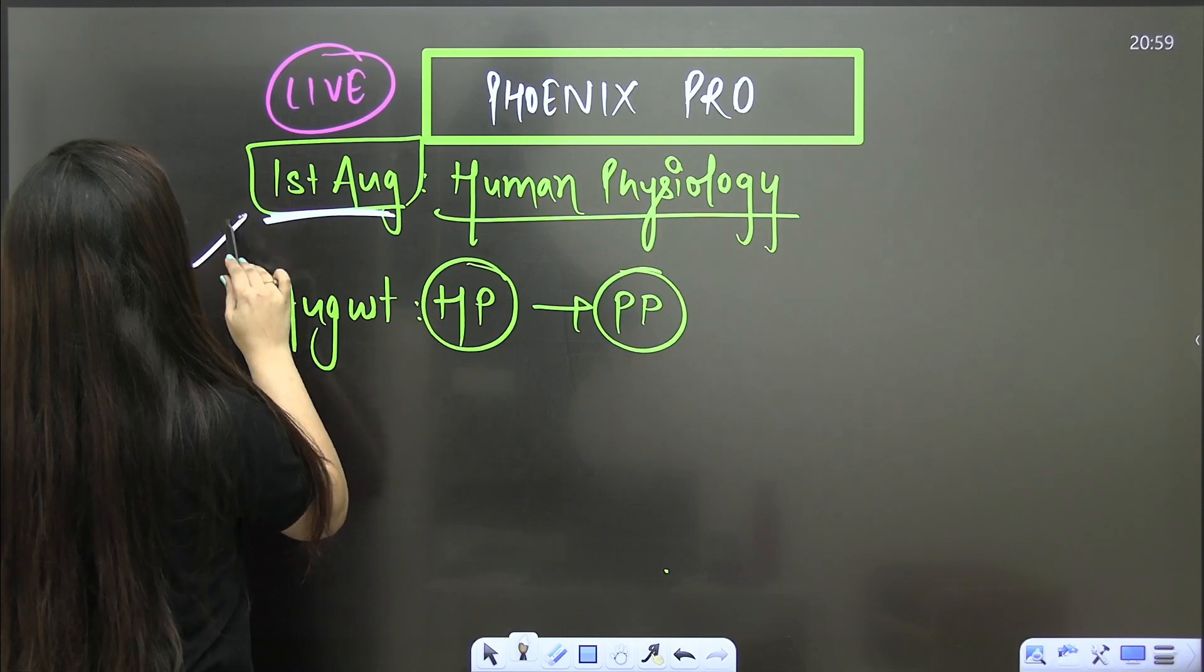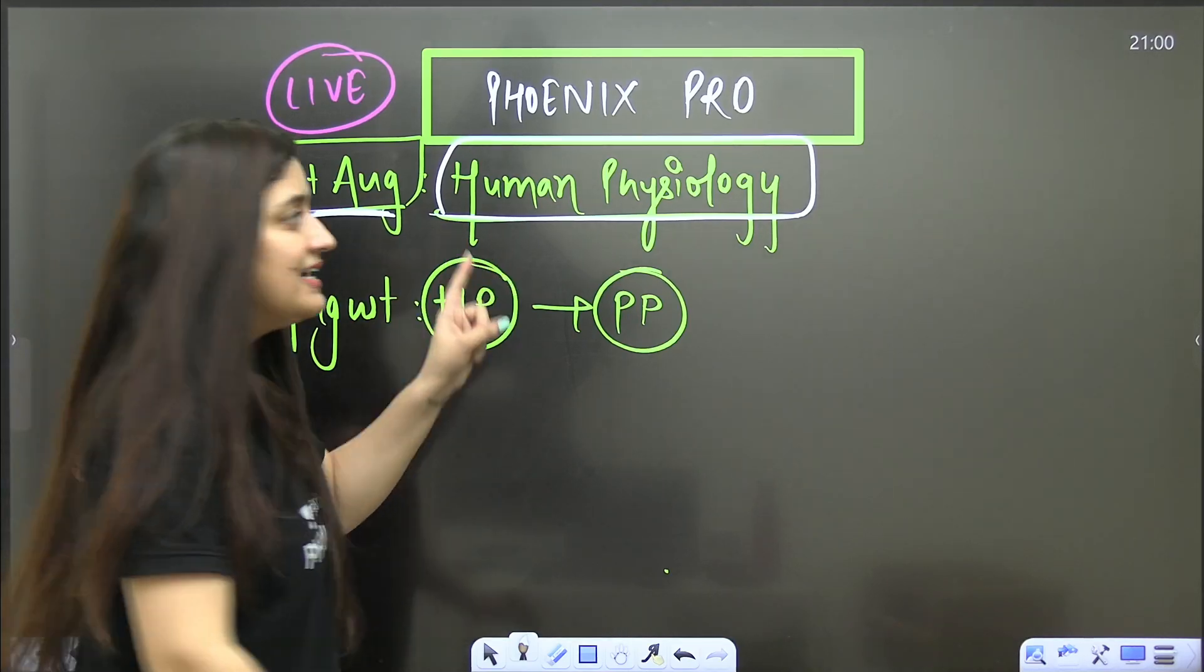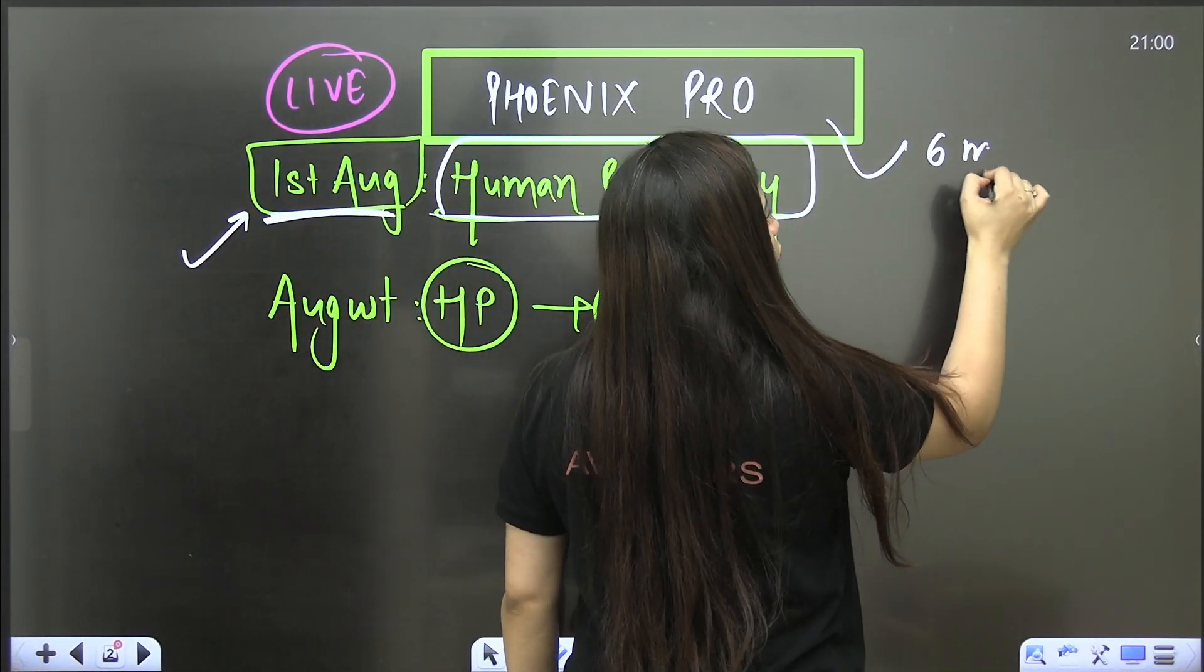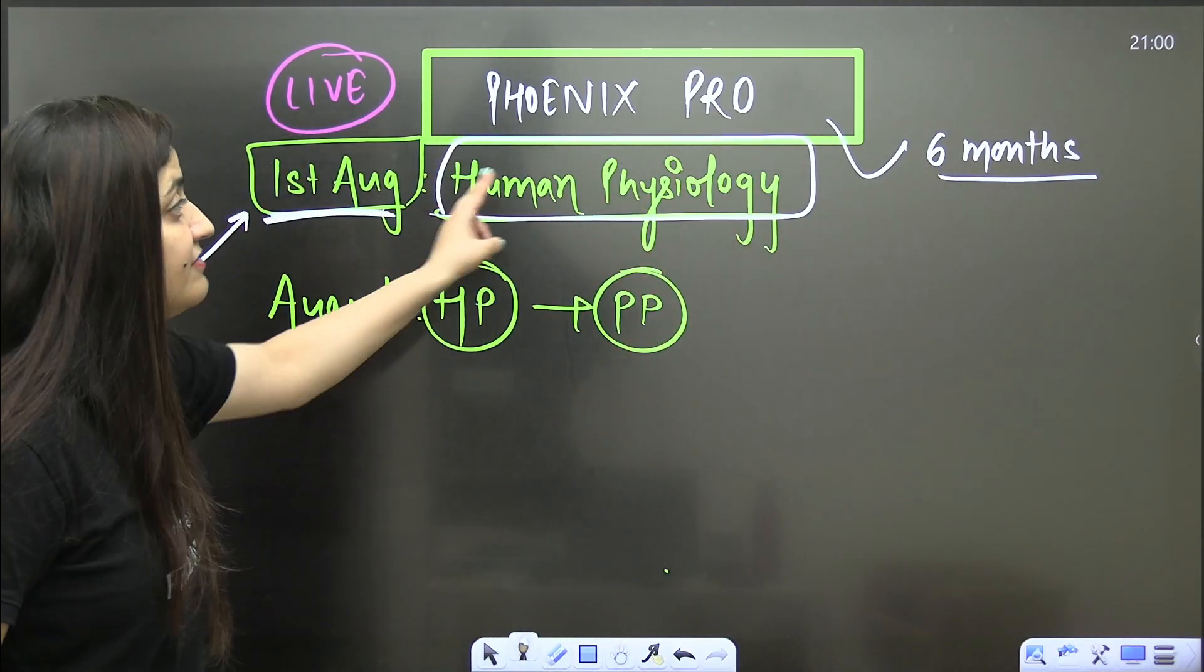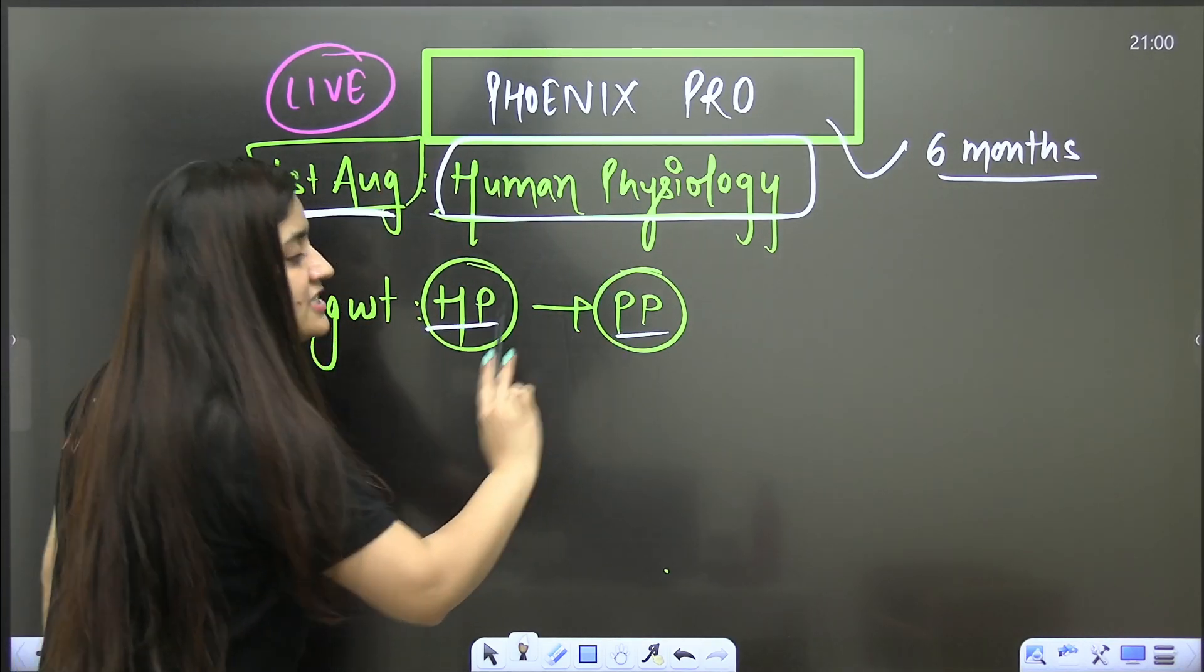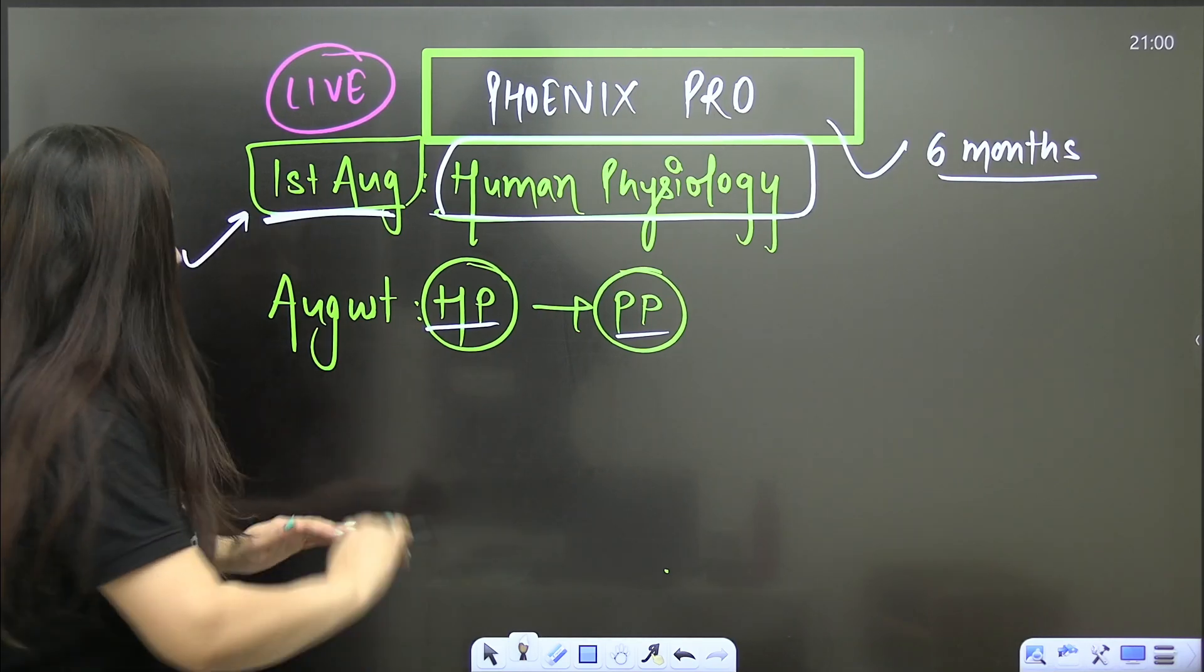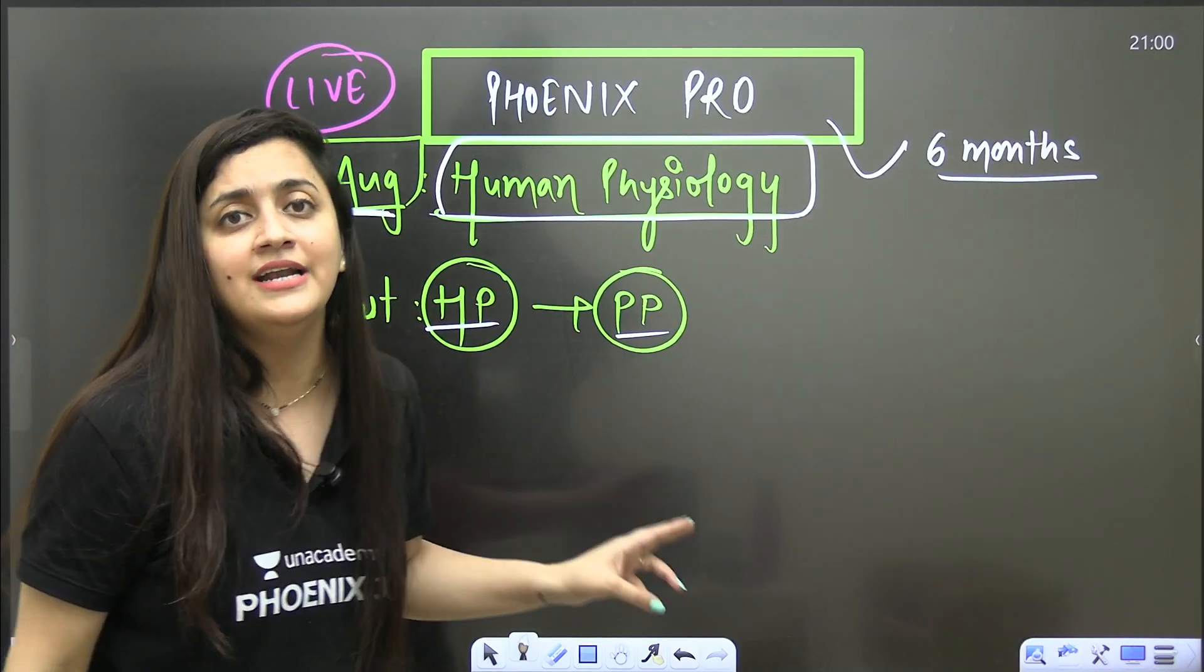Basically in this particular batch, in six months we are going to finish your syllabus. I have started with the human physiology. In the month of August we will target human physiology as well as plant physiology. Collectively till mid of September you can finish these two most important units.